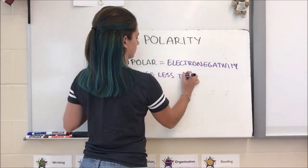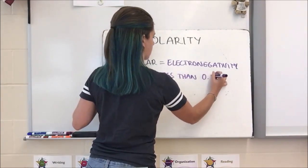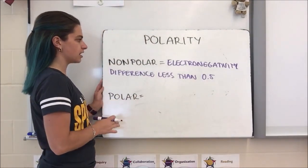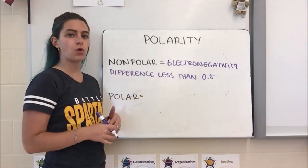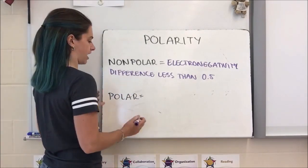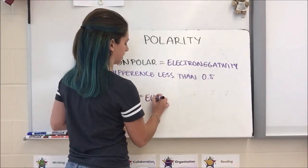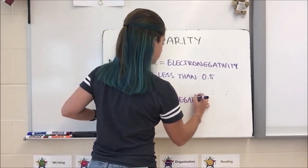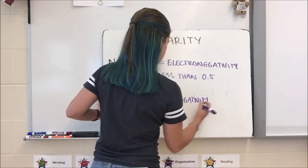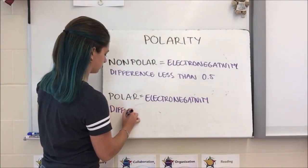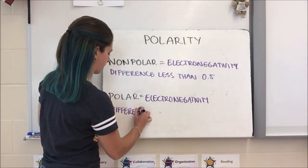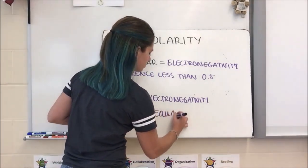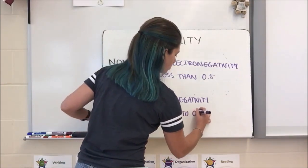For a polar bond you have an electronegativity difference that's equal to or greater than 0.5.